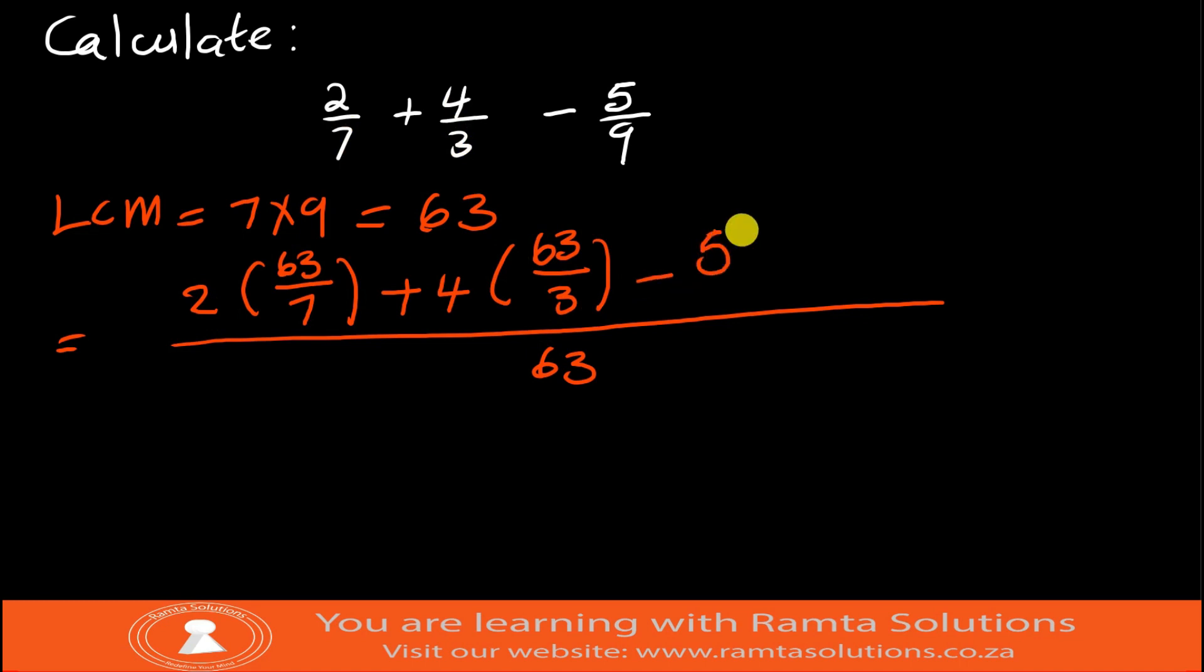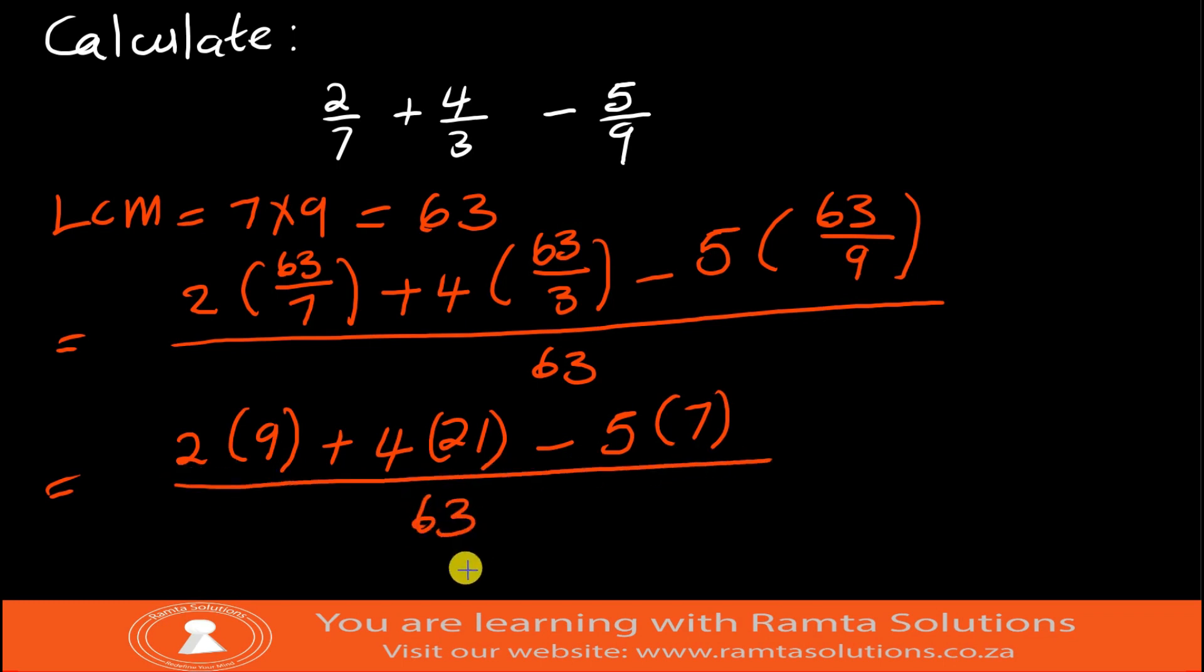Minus 5, 63 over what was the denominator - it was 9, right? Now you can say, okay, this is 2 - 63 divided by 7 is 9 - plus 4 into 63 divided by 3, 9 is 7, all over 63.